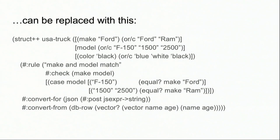The struct has three fields: make, model, and color. Make is either Ford or Ram. Model is either F-150, 1500, or 2500, and they must be strings. Color is either blue, white, or black. Make will default to Ford, color will default to black. We have a check rule that examines make and model together.